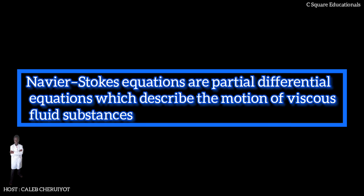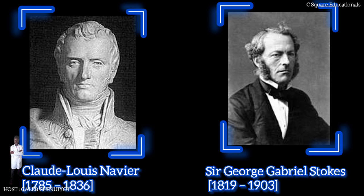In physics, Navier-Stokes equations are partial differential equations which describe the motion of viscous fluid substances, named after French engineer and physicist Claude Louis Navier and Anglo-Irish physicist and mathematician George Gabriel Stokes. They were developed over several decades of progressively building the theories from 1822 Navier to 1842 to 1850 Stokes.